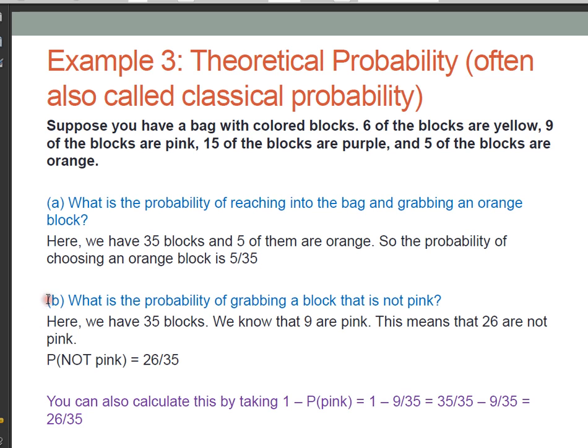The second question is, what is the probability of grabbing a block that is not a pink block, so not pink? There's actually two different ways to solve this. Again, we know we have 35 blocks total. We know that nine of them are pink. Well, if nine out of the 35 are pink, that means that 26 of them, all the remaining blocks, are not pink. So the probability of getting a block that's not pink is 26 out of 35.